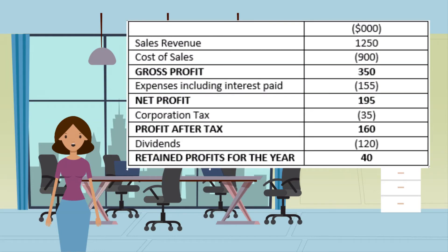What is an income statement? An income statement is a financial document of the business that records all income generated, the costs incurred, and the profit or loss made over the financial year. It is also known as a profit and loss account.